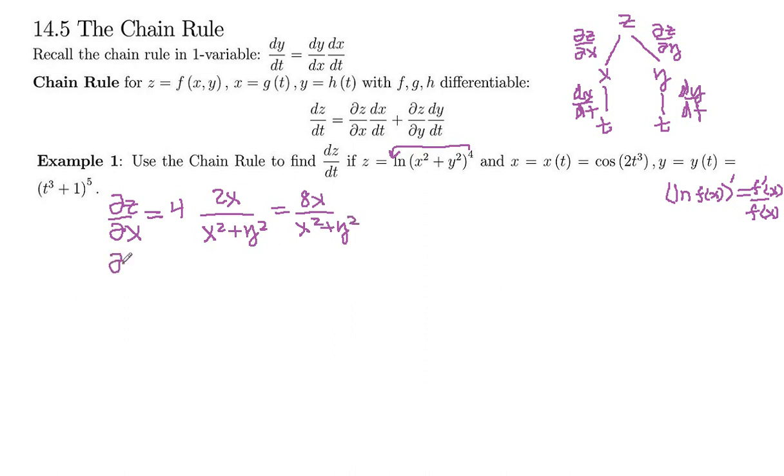And then similarly, we can do ∂z/∂y. That's going to be 4, function goes on the bottom: x² + y², and then y derivative on the top. Y derivative of x² is 0, y derivative of y² is 2y. So 4 times 2y is 8y, and then x² + y² downstairs. So we've got this piece and we've got this one.